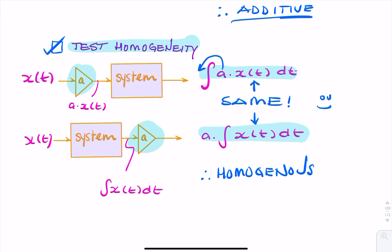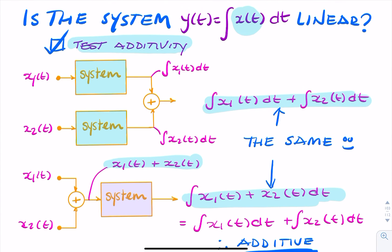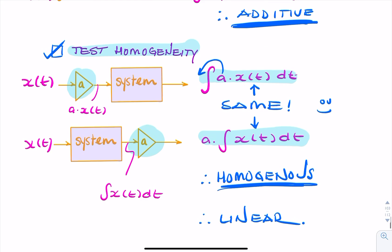And because we know that it's additive and homogenous, we can say, therefore, it's linear. So integration is a linear process. We've just demonstrated it's linear because it's passed the two tests of additivity and homogeneity.